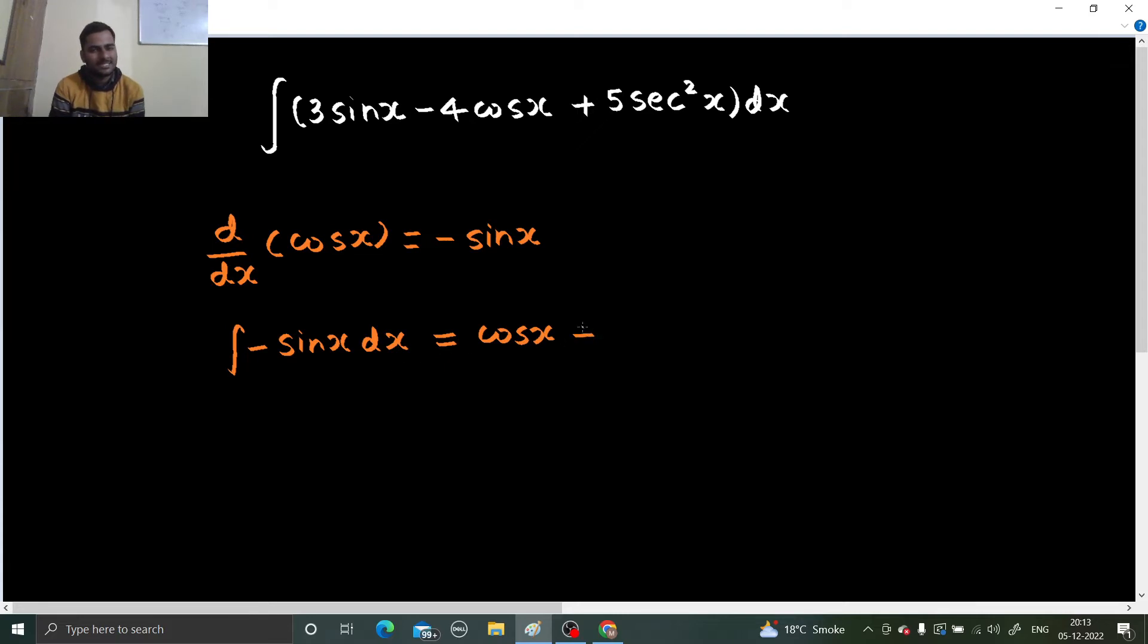The derivative of 2 gives you 0, so if 2 would have been there, same result would have come. So now just this minus sign not looking good on this side, so integration of sin x dx gives you minus of cos x plus C. Okay, that's why I prefer writing C in the end.